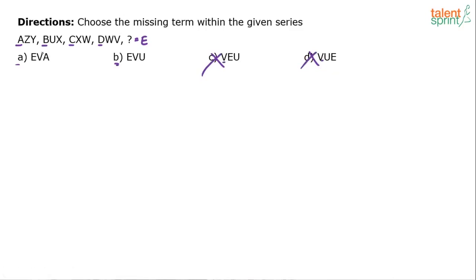Now try to find out the logic in the other letters there. Like for example, I mean like most of you have pointed out, if I look at the last letter, Y, X, W, V. These are in the reverse order. You see, reverse alphabetical order, Y, X, W, V. So it should be U.